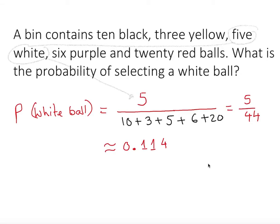So we say P of white ball equals 11.4% or simply 0.114. That's how we solve this probability question.